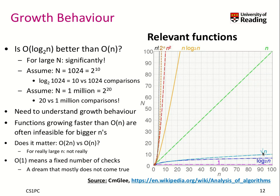All the algorithms at the bottom of the table are really good. Of course, the best algorithm is one that takes a constant amount of time — an O(1) algorithm. This is really a dream for a programmer, but unfortunately, for any significant algorithm, that dream doesn't come true.